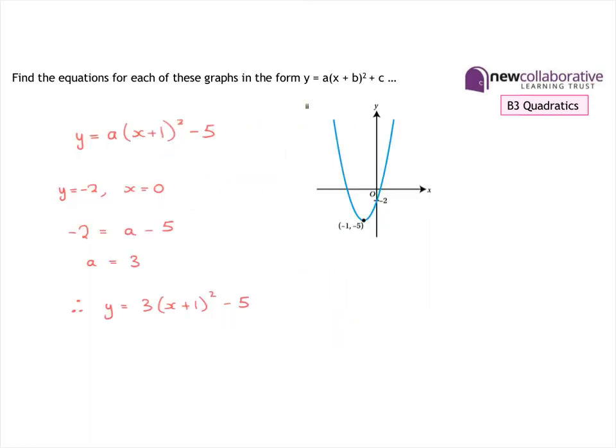Here's the solution to the second one. Using the same method, we end up with y = 3(x + 1)² - 5.